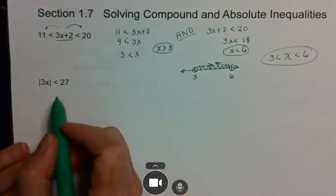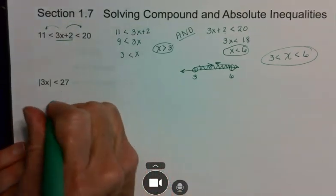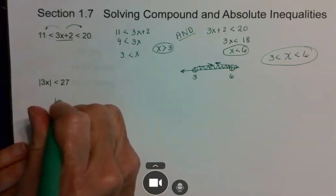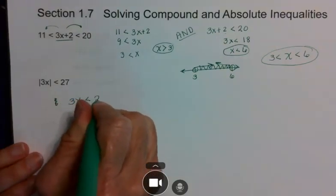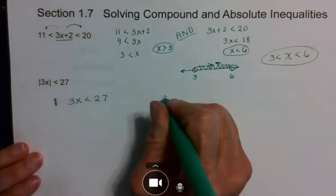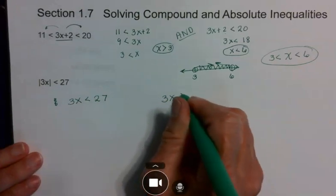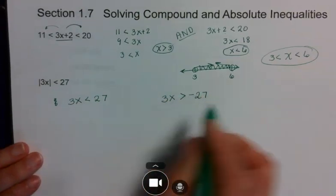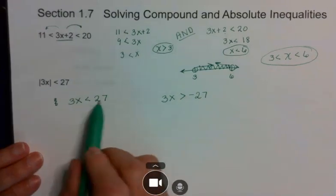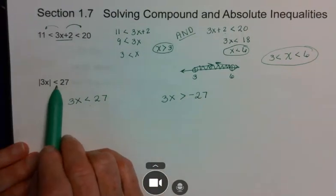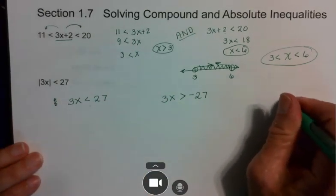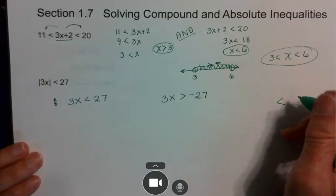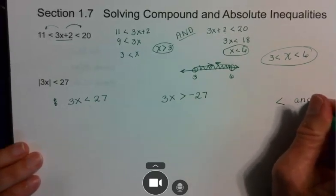This one, I have the absolute value involved. So remember, you're going to look at it as it is. So I have 3x is less than 27. Then you're going to take it, 3x, switch the inequality, and take the opposite sign. So these are my two equations. Now, to know whether it's a greater than or less than, remember, you're going to exaggerate. Less than means it's an AND statement.